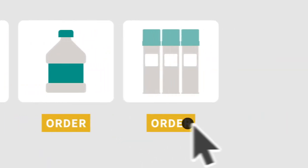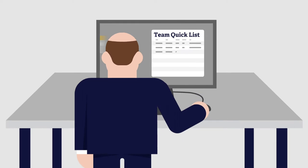You already know the Pest Web online store makes buying the products you depend on easy, but do you know how you can use it to streamline orders across your team? Team quick lists are a great example.